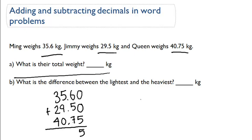6 plus 5 plus 7, so 6 plus 5 is 11. 11 plus 7 is 18. So we have 8, and then we're going to carry the 1 over.